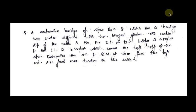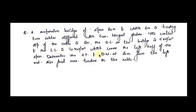Now let us do one numerical problem on two-hinged stiffening girder. In order to solve this question you must watch the previous video in which we discussed the various concepts of the two-hinged stiffening girder. The question is: a suspension bridge of span 80 meters and width 6 meters is having two cables stiffened with two-hinged girders. The central dip of the cable is 8 meters. The dead load on the bridge is 5 kN per meter square and the live load is 10 kN per meter square which covers the left half of the span. Determine the shear force and bending moment at 20 meters from the left end. Also determine the maximum tension in the cable.